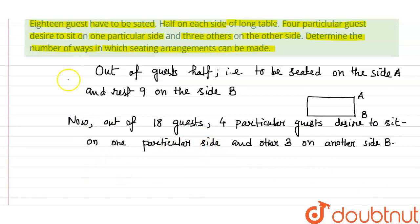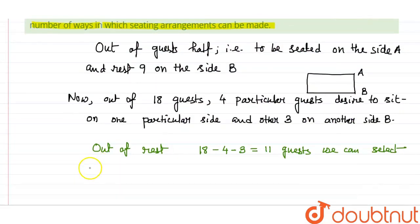So out of the rest, how many rest are there? 18 total guests minus four seated on one side, three seated another side. The rest is 11 guests. We can select five more for side A.